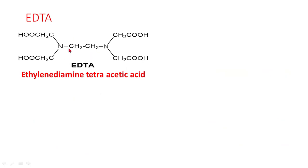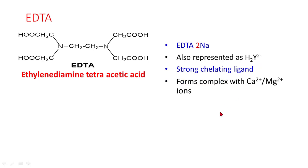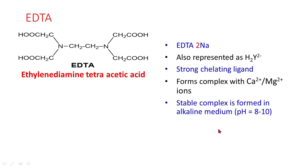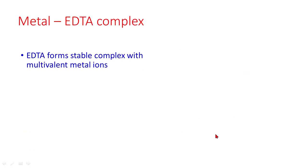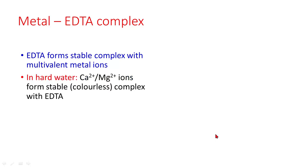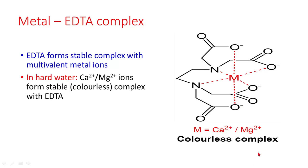This is the structure of ethylenediamine tetraacetic acid. Its disodium salt is used, and it is also represented as H₂Y²⁻. It is a strong chelating agent that forms a complex with calcium and magnesium ions. A stable complex is formed in alkaline medium, and this is the hexadentate ionic structure with four oxygen and two lone pairs of electrons. EDTA forms stable complexes with multivalent metal ions. In hard water, calcium and magnesium ions form a stable, colorless complex with EDTA.